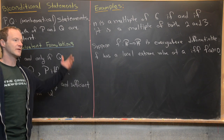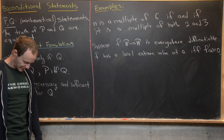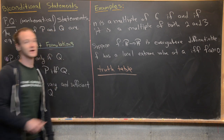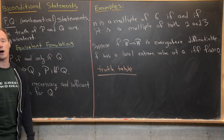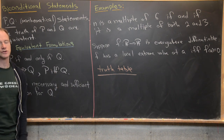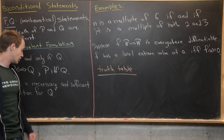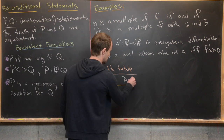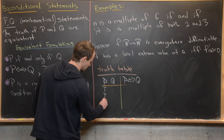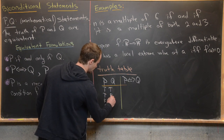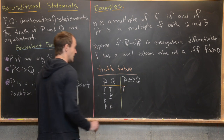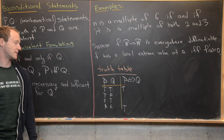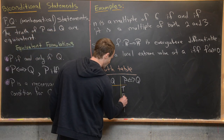You could also write false biconditional statements — for instance, taking the first polynomial/continuous example and turning it into an if-and-only-if would give a false statement. Now the truth table: since P and Q are equivalent, when both are true the biconditional is true, when both are false it's true, but when they differ it's false. So the truth table gives: true, false, false, true.